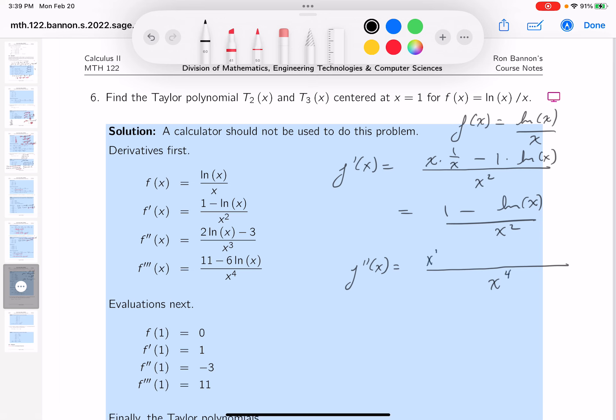And then bring the bottom to the top, which is x squared, times the derivative of the top, which is minus 1 over x, minus the top times the derivative of the bottom, which is 2x.